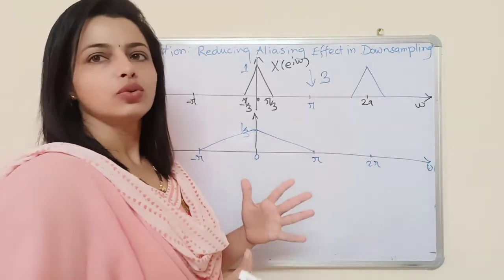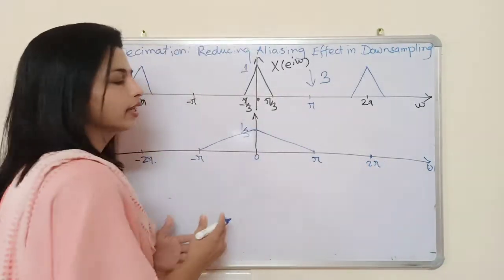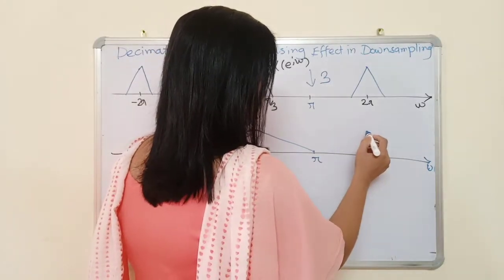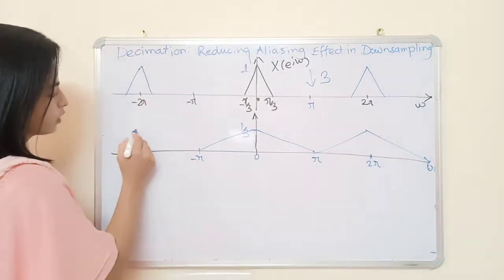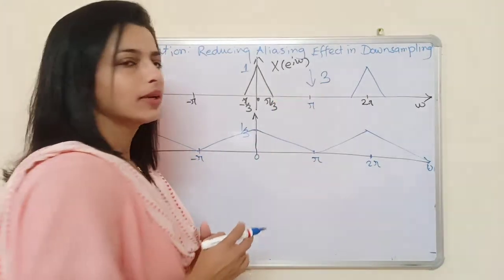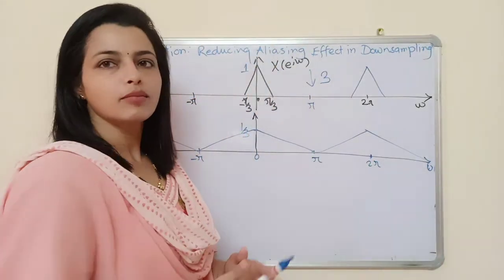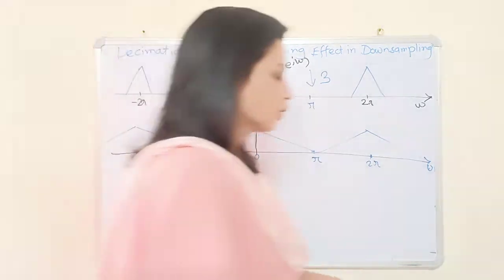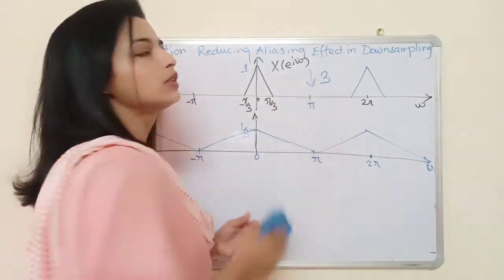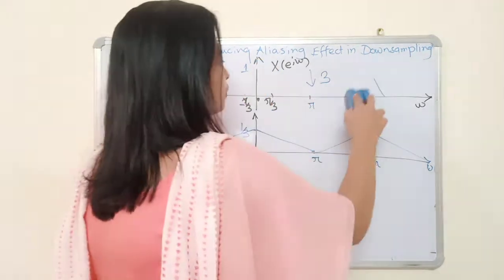We also saw how to draw the shifted images, which are placed around ±2pi. Now we'll see what happens when the signal's highest frequency is somewhat larger than pi/3 in the case of down-sampling by a factor of 3. Let us draw a signal along with its images, since the originally sampled discrete-time signal has images in its spectrum.